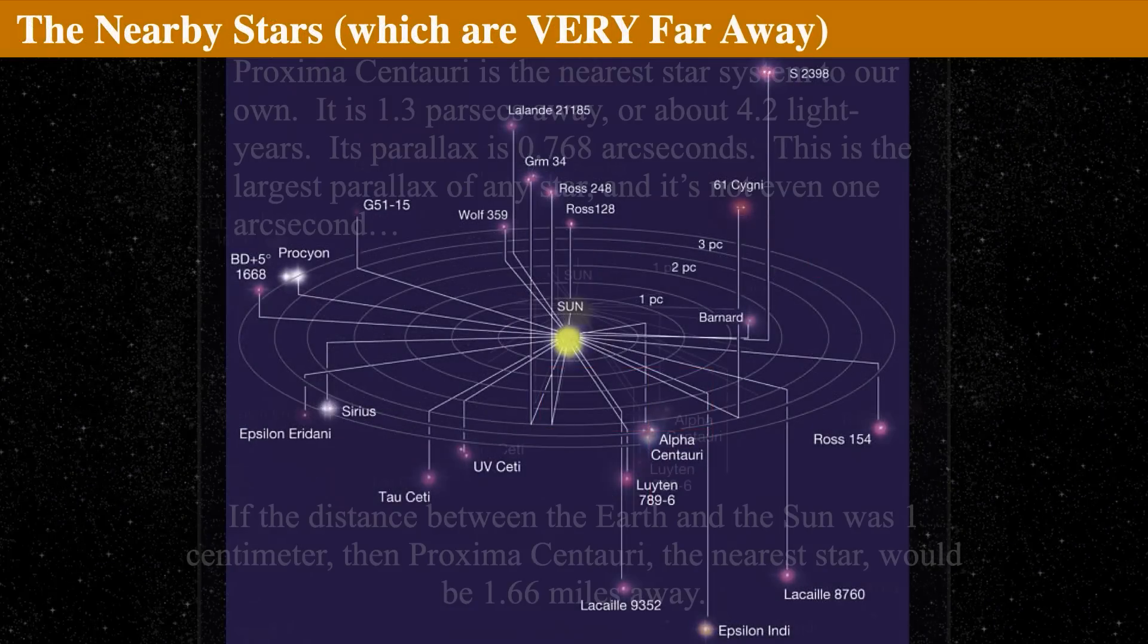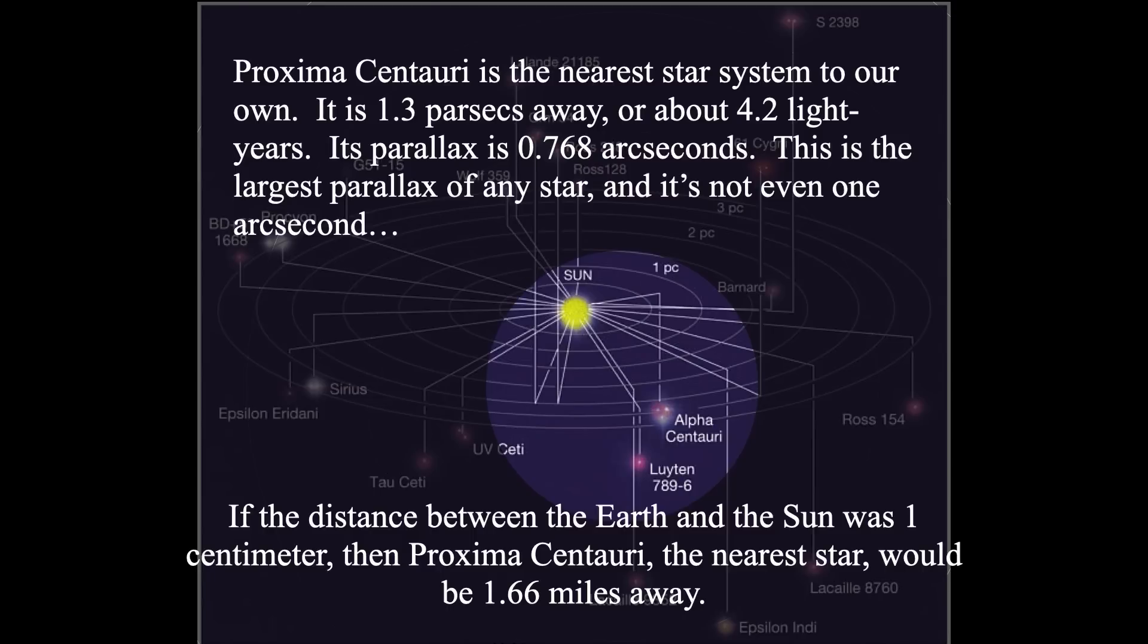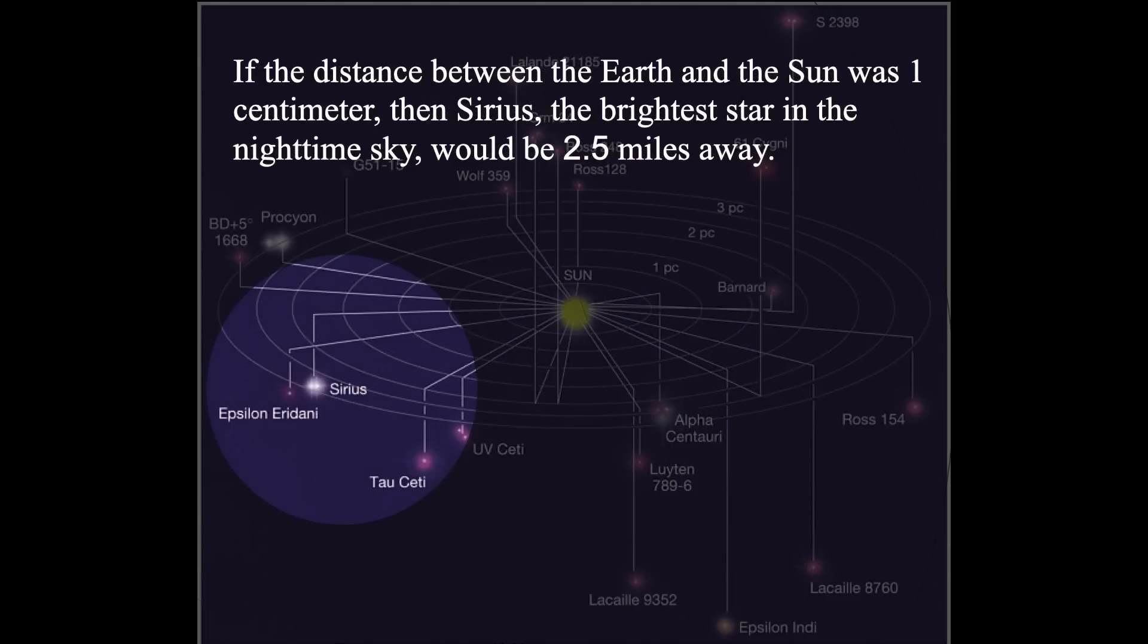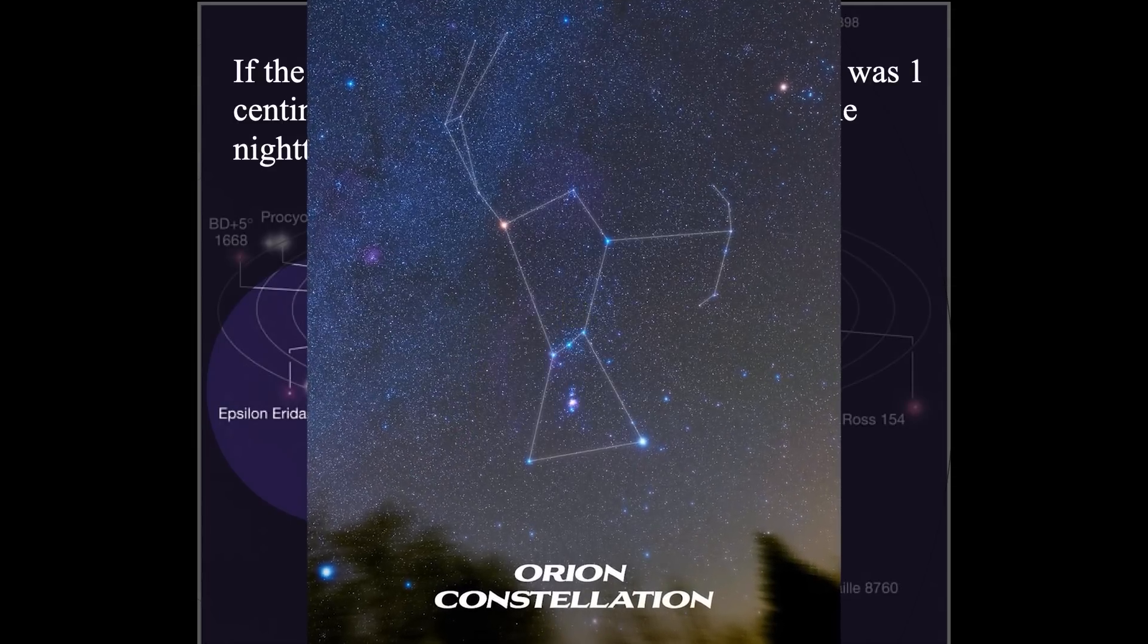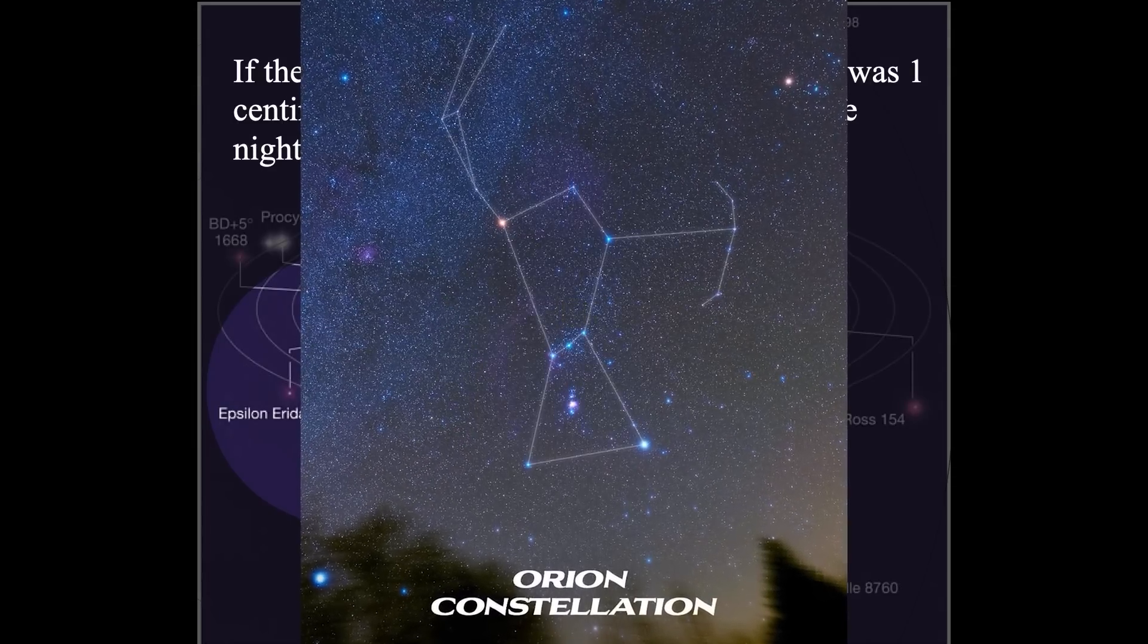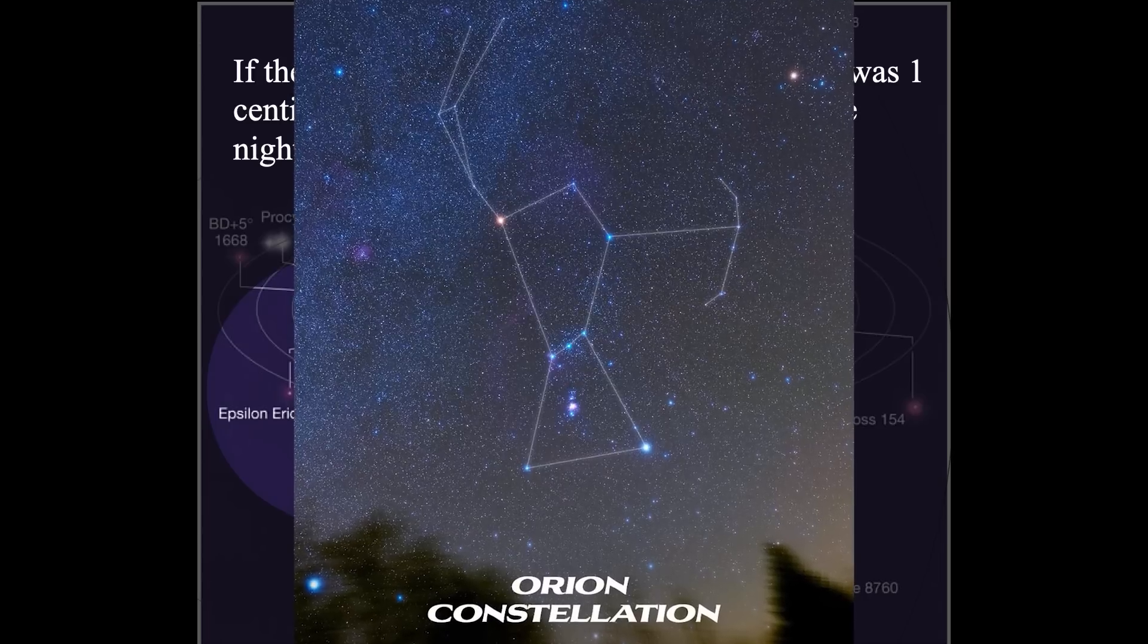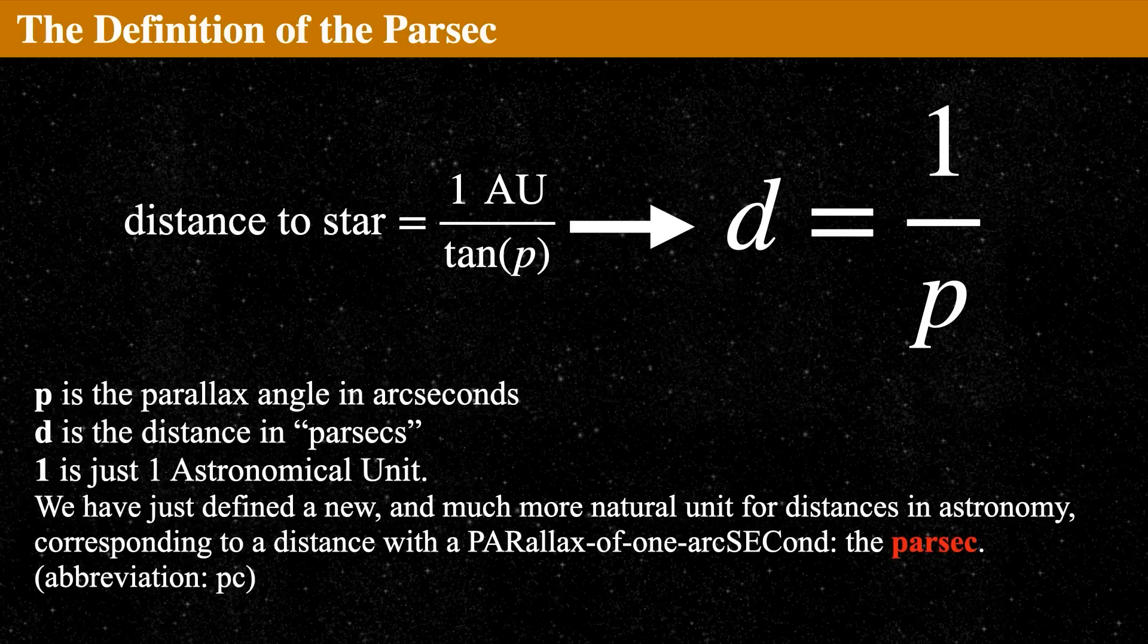If we look at Alpha Centauri and say how far it is based on that triangulation method, if the distance between the sun and the earth was the width of your pinky, then the distance to Alpha Centauri is about 1.7 miles. The distance to the brightest star in the sky, Sirius, is about three and a third miles. And Betelgeuse, which is that star in Orion, is 250 miles away.